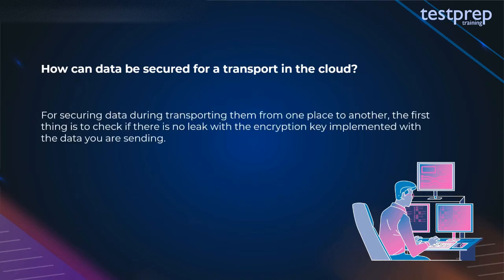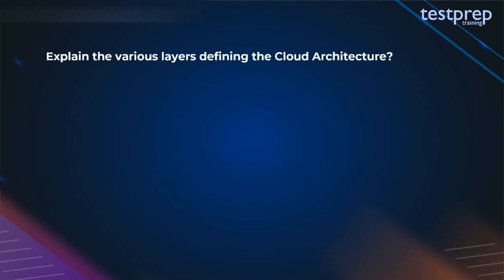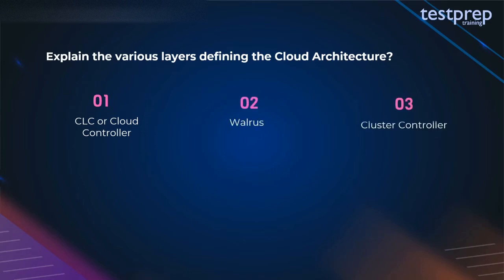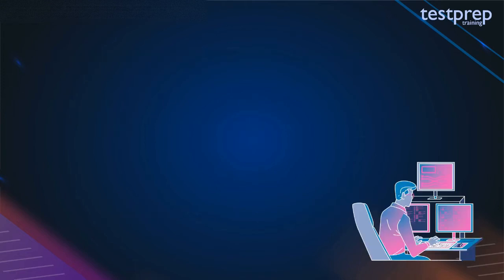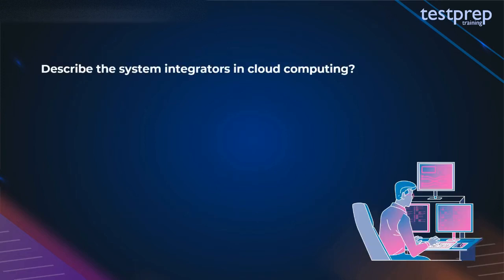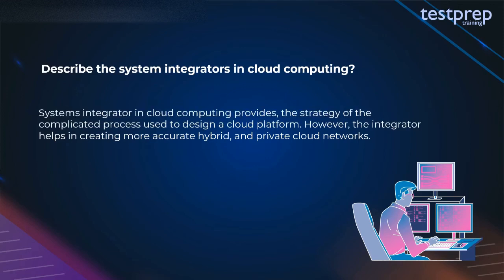Question 21: How can data be secured for transport in the cloud? For securing data during transport, the first thing is to check that there is no leak with the encryption key that can be implemented with the data you are sending. Question 22: Explain the various layers defining the cloud architecture. The different layers include: first, CLC or Cloud Controller; second, Walrus; third, Cluster Controller; fourth, SC or Storage Controller; fifth, NC or Node Controller.